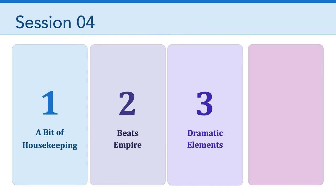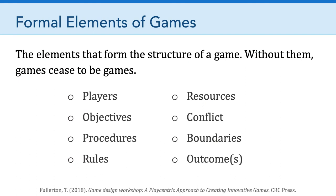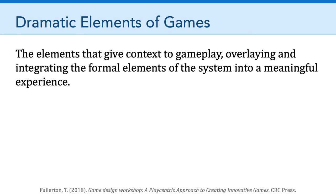Next, I want to talk about the next part of games we'll be focused on, which are the dramatic elements. Last week, we focused on formal elements of games — the elements that form the structure of a game, which we need in order for games to be games. Several of you pointed out in your critical reflections that Beats Empire has all of these elements, and of course, because Beats Empire is a game, by definition it should have all of these formal elements. This week, we're focused on dramatic elements. Fullerton and colleagues argue that dramatic elements are the elements that give context to gameplay, overlaying and integrating the formal elements of the system — remember, games are systems — into a meaningful experience. So if you want to have context in gameplay and you want that gameplay to be a meaningful experience, you need to have these dramatic elements.